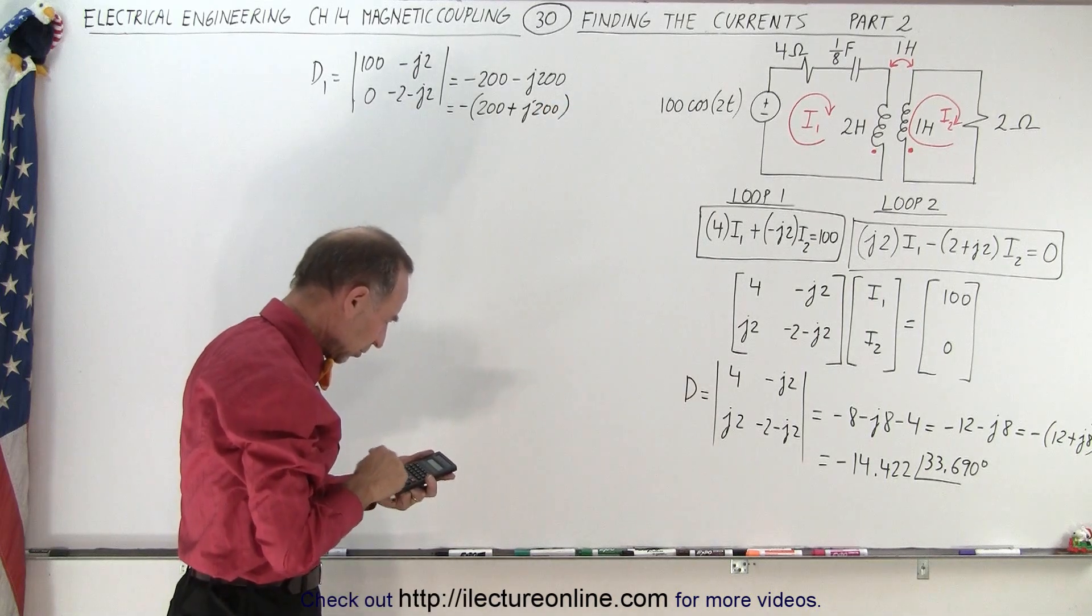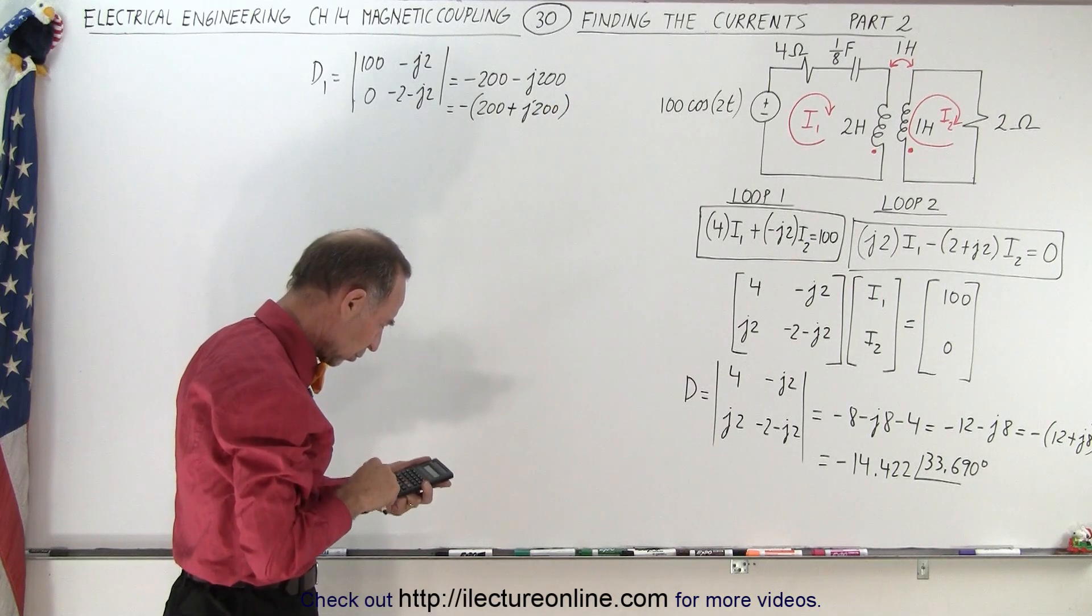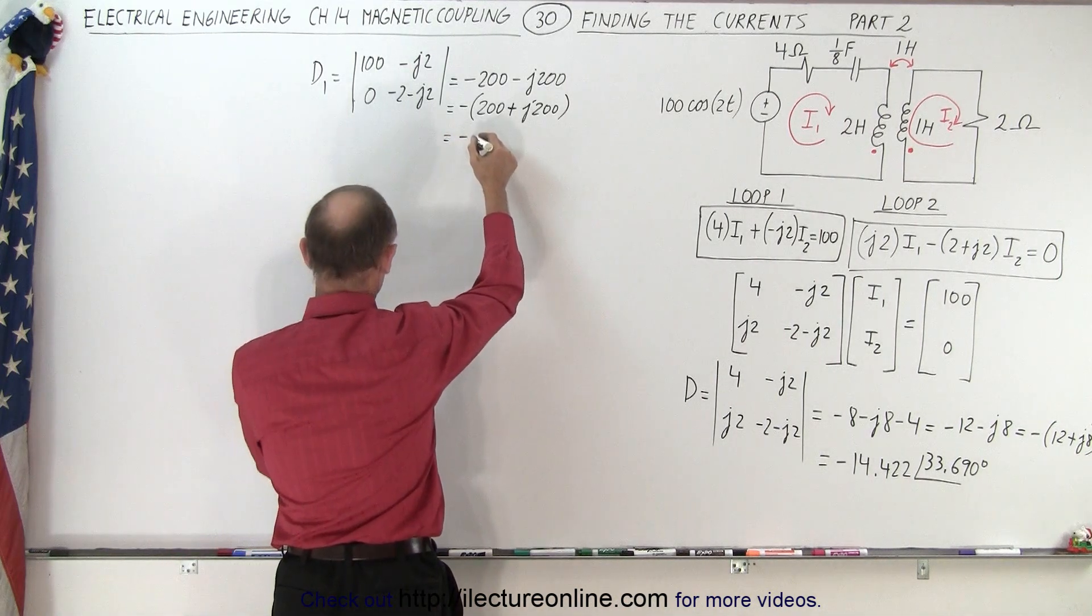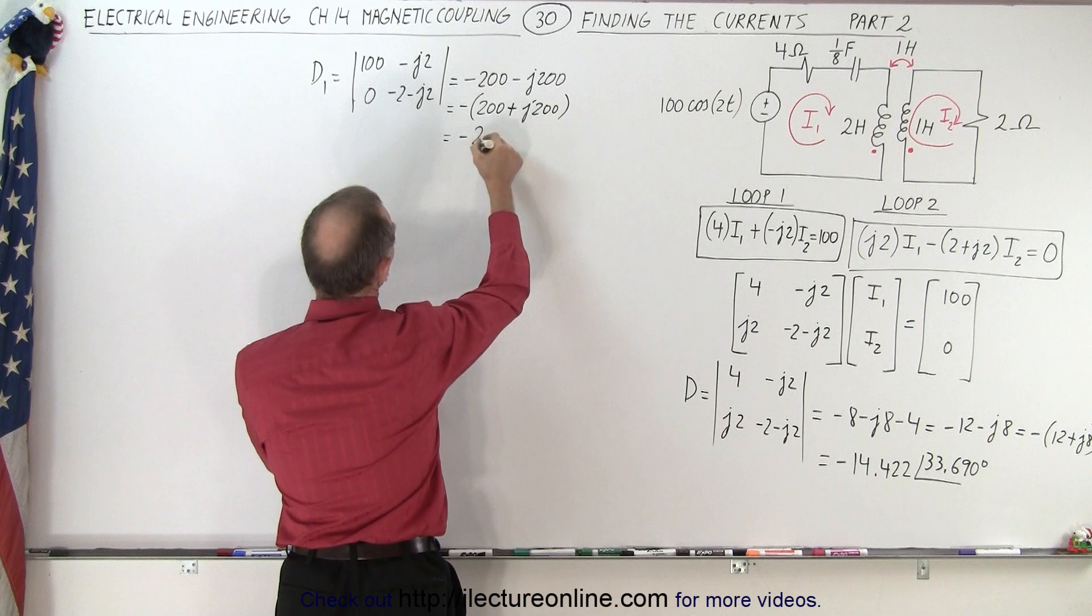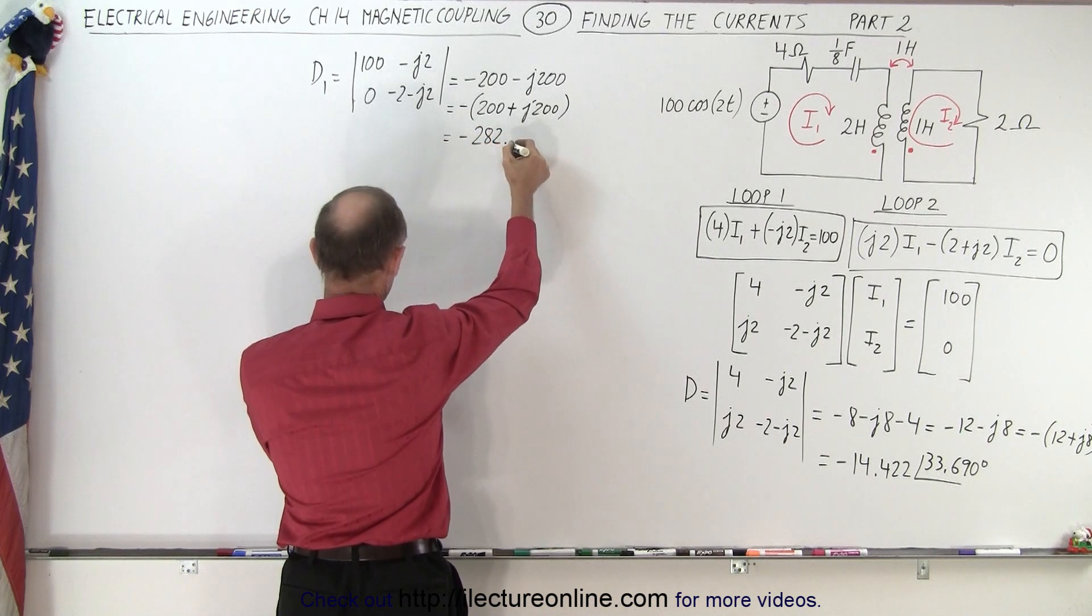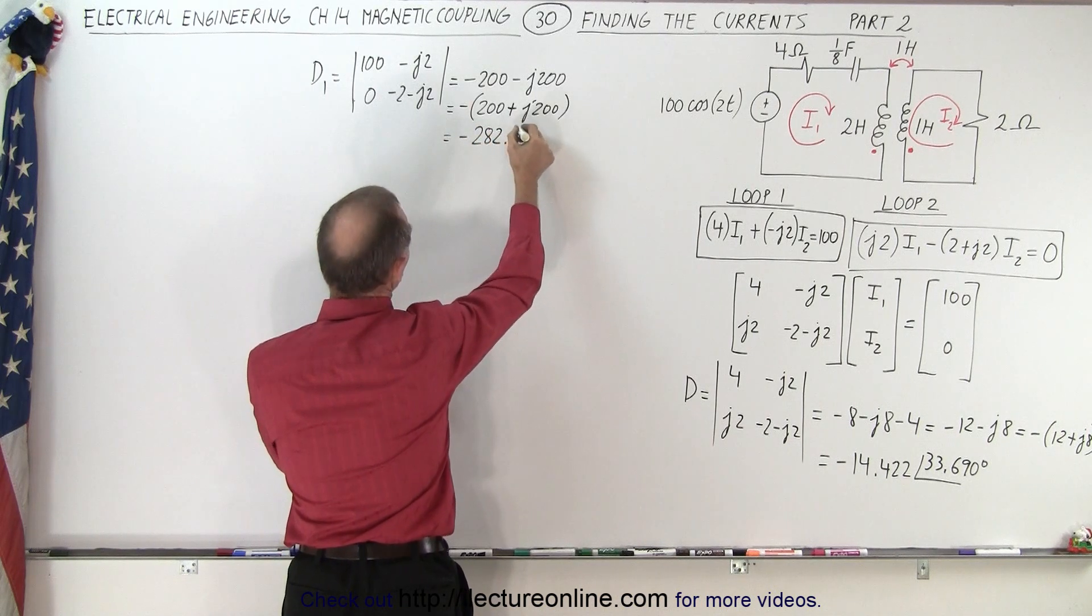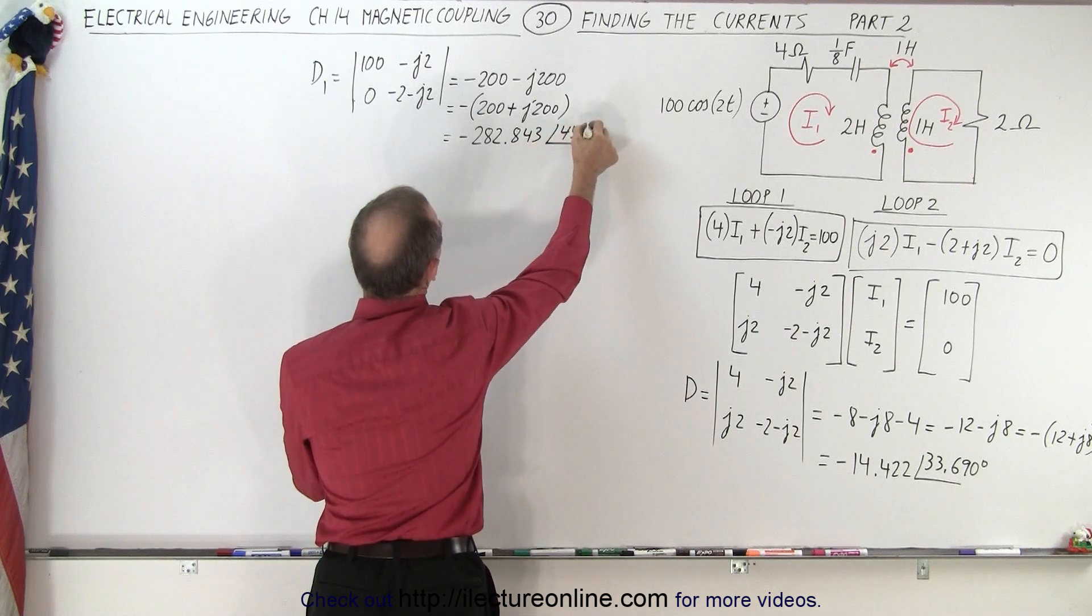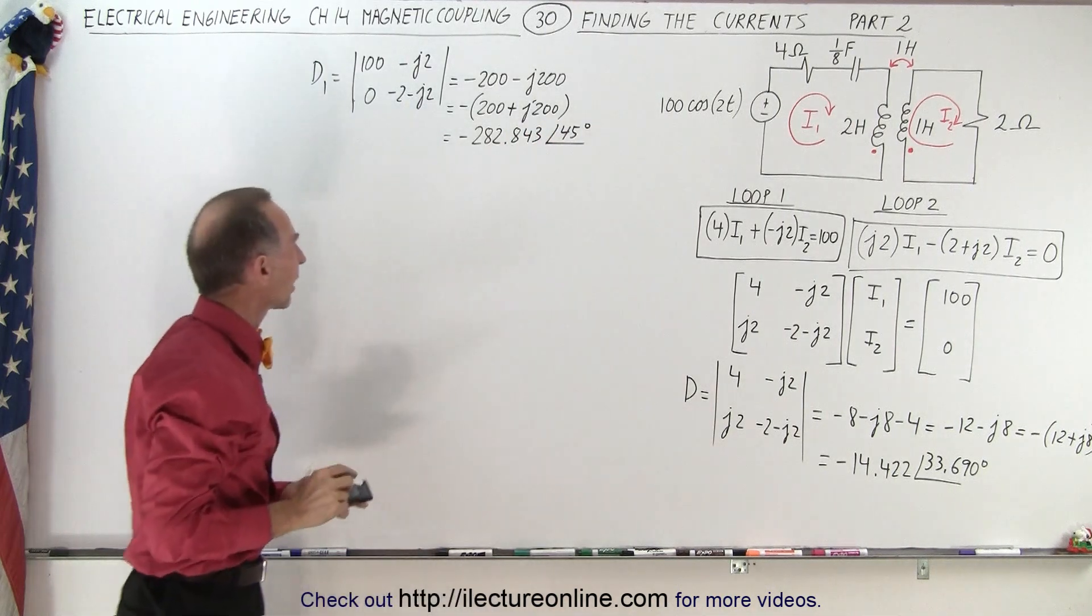We have 200 squared times 2, take the square root. So we end up with this equal to negative 282.843 with a phase angle of 45 degrees. Of course, we can't forget the negative sign there.